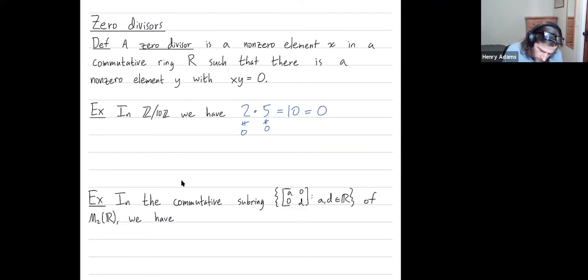So to get an example of a zero divisor, first let's let D be zero, and let's let A be something non-zero like 3.